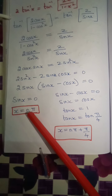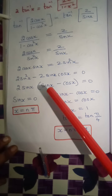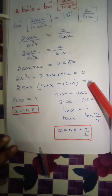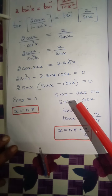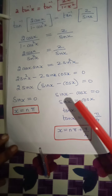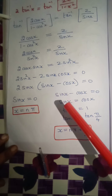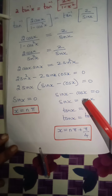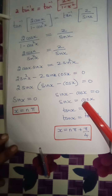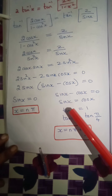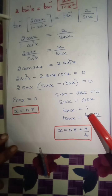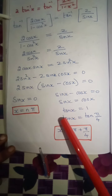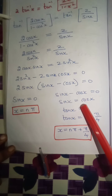Now solving sin x minus cos x equals 0. Moving cos x to the other side gives sin x equals cos x. Dividing both sides by cos x: sin x by cos x equals 1, which means tan x equals 1. Since tan 45 degrees equals 1, we write tan x equals tan pi by 4.